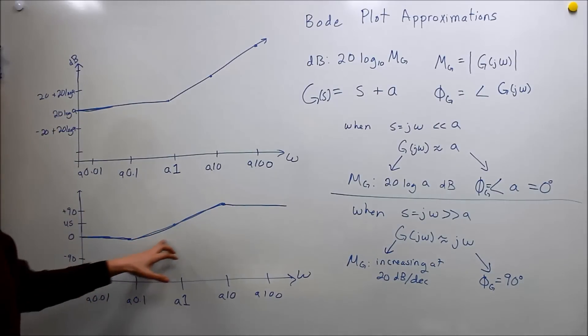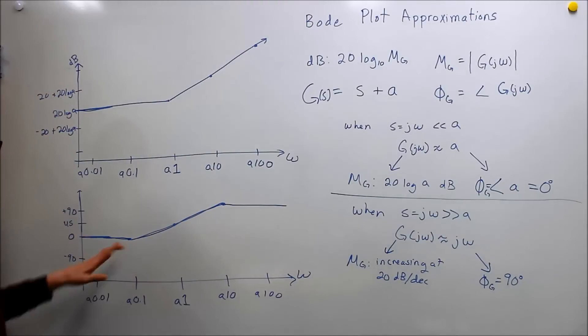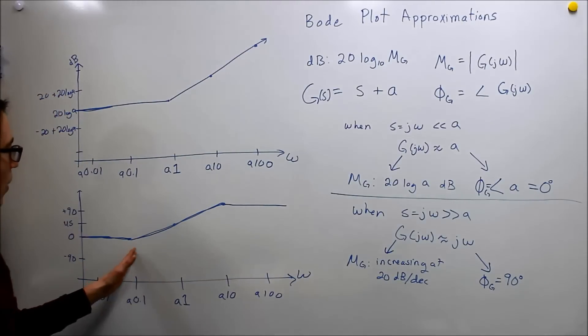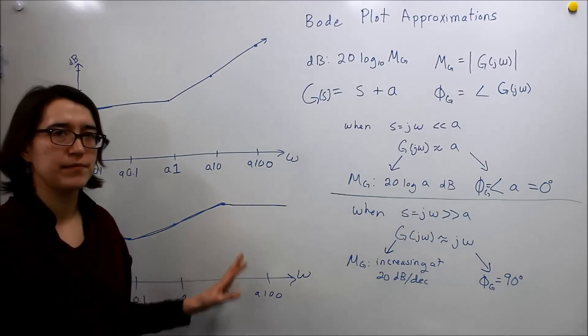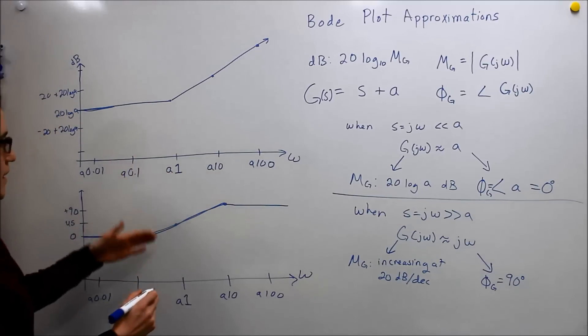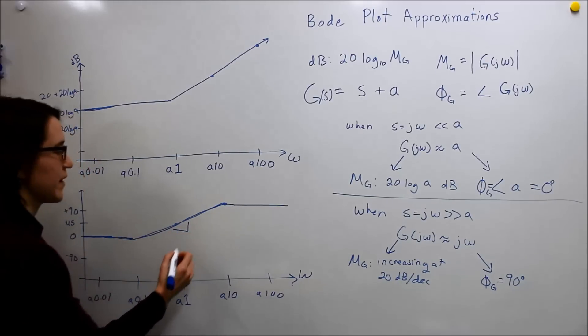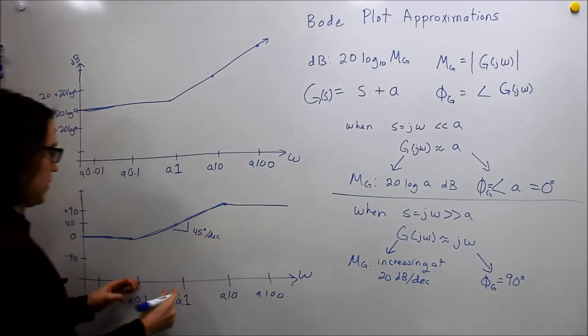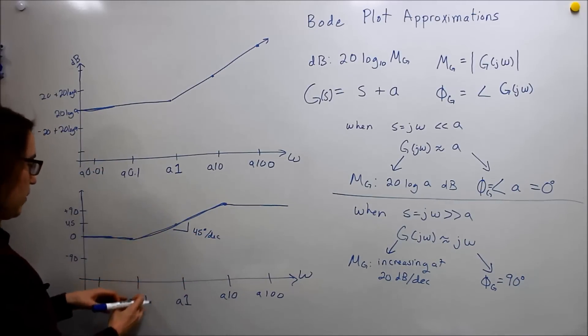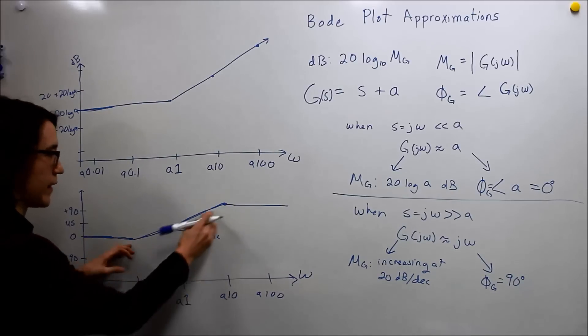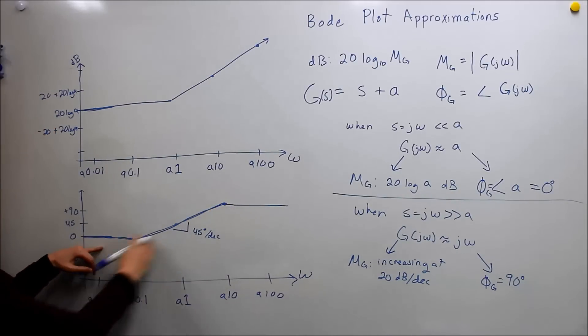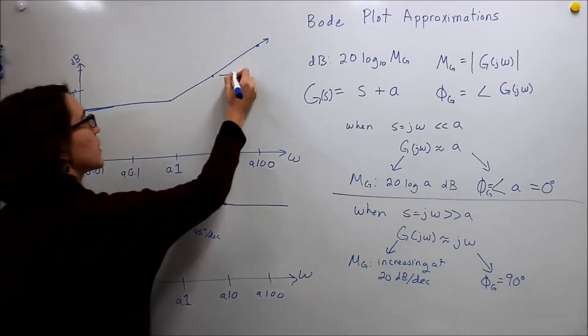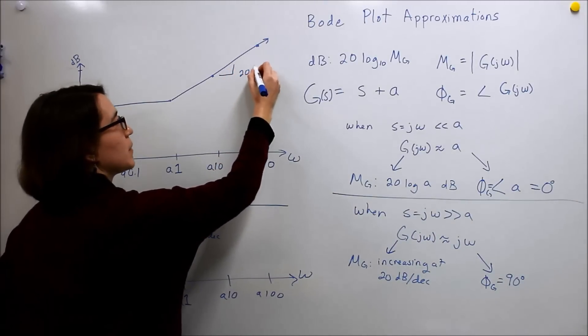And we draw the lines from, I believe, one decade below and one decade above. So this will be approximately increasing at 45 degrees per decade, so to go from 0 to 90, we go one decade below and one decade above, and that would be our approximate line from our 0 to 90, and then here we know that we're increasing at 20 dB.